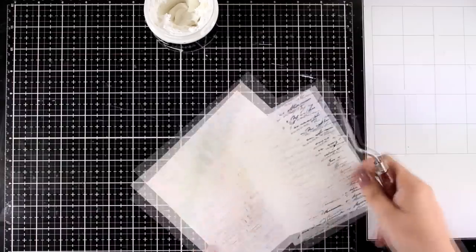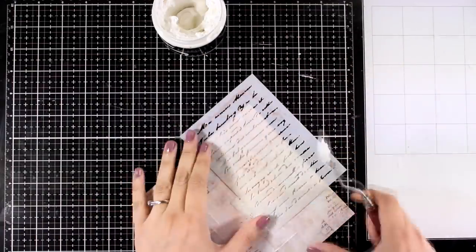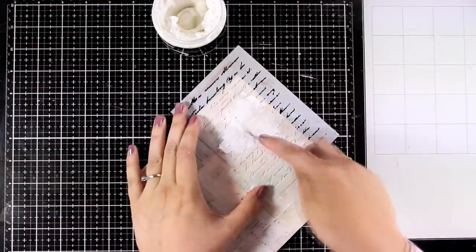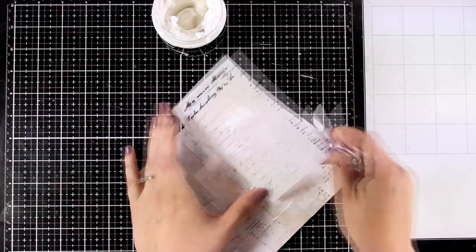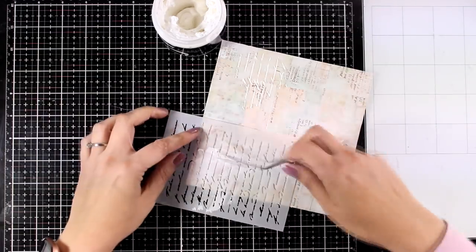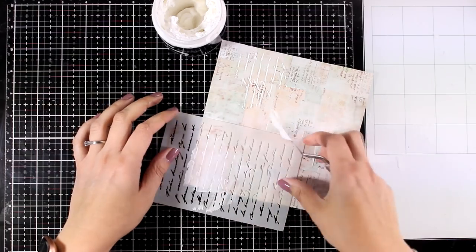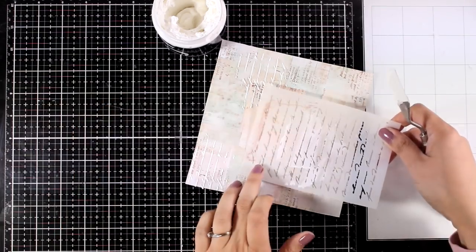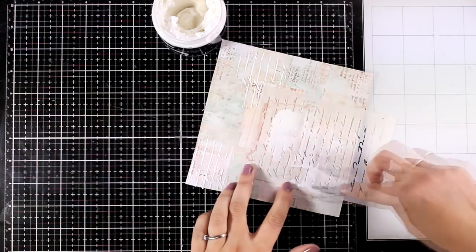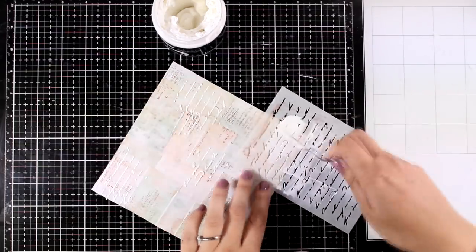Another favorite technique and one of my go-tos is to add a little bit of modeling paste through a stencil. In this case again I'm using a stencil with a text on top. I'm not even sure where I got this stencil, sorry about that. I just found it in my stash and I thought that it would be perfect for using on the project.